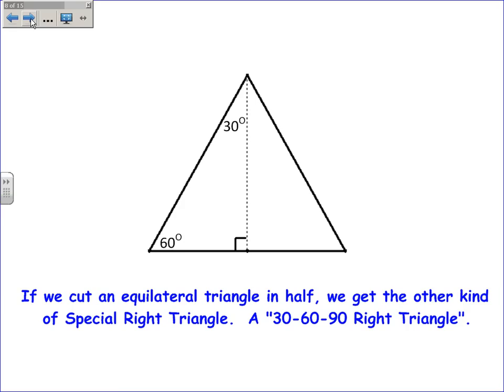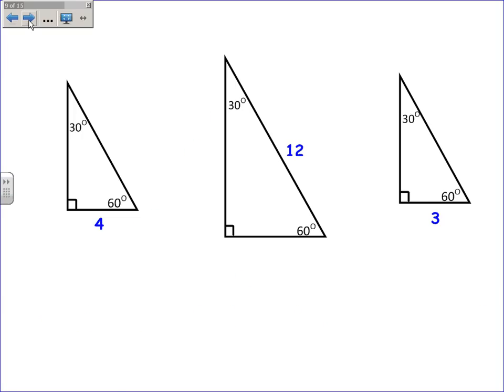The other kind of special right triangle is half of an equilateral triangle. If you cut it in half, you get a 30-60-90 right triangle. The important thing about the side lengths is that since we've cut it in half, the shortest leg is half of the hypotenuse. If the shortest leg is 4, the hypotenuse must be 8. If the hypotenuse is 12, the shortest leg must be 6. If the shorter leg is 3, the hypotenuse must be 6.